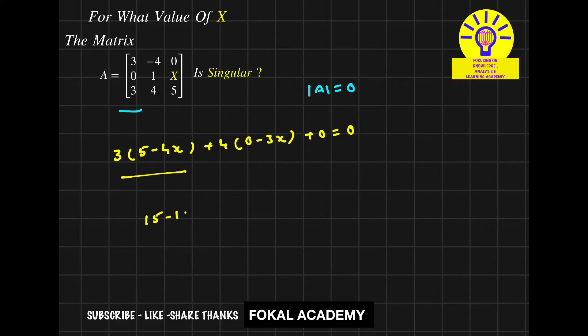15 minus 12X and it becomes minus 12X plus 0 equal to 0, so it nothing but minus 24X equal to minus 15. So from this we get X equal to 15 by 24, and this is